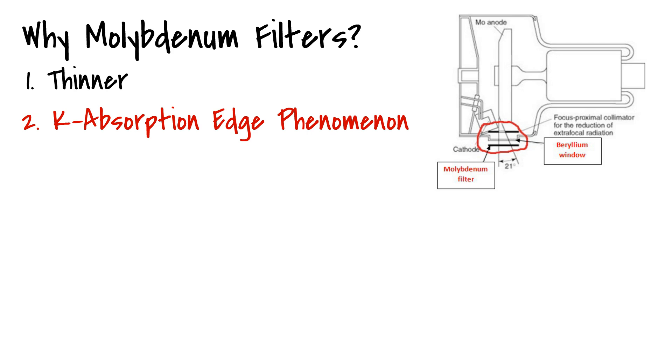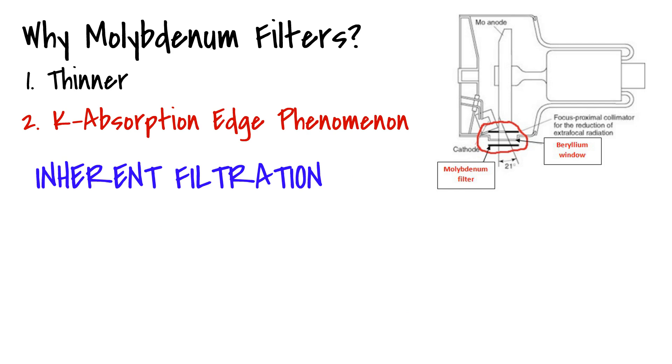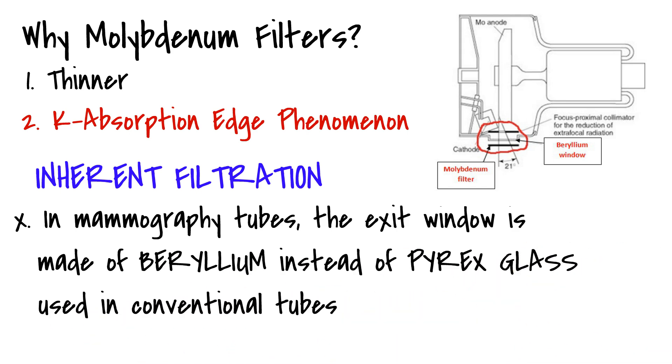So far, we have been discussing added filtration. We should also mention that the mechanism for inherent filtration is also different in mammography tubes. A major source of inherent filtration is in the exit window, which is made of pyrex glass in conventional tubes.